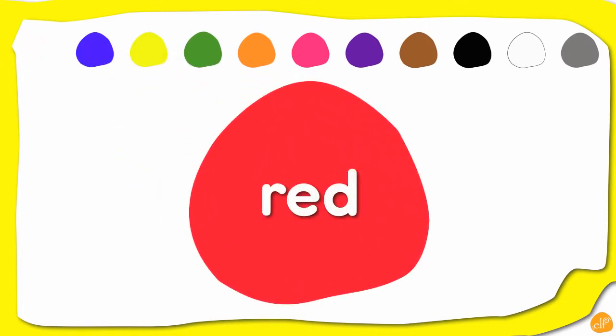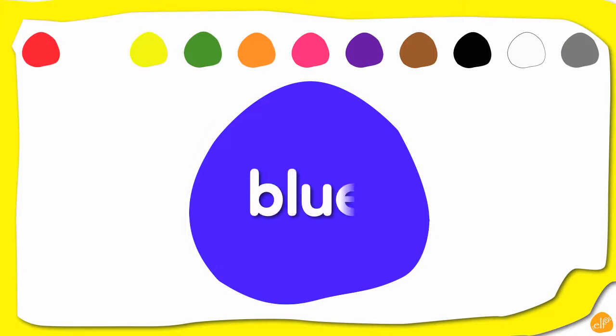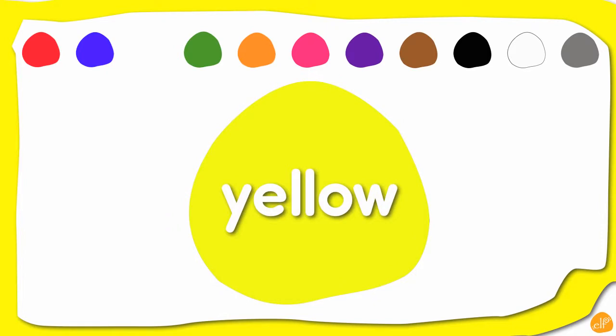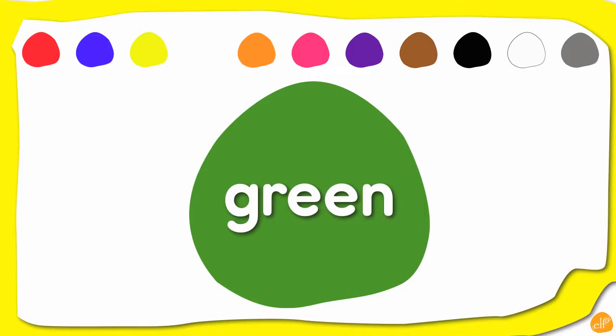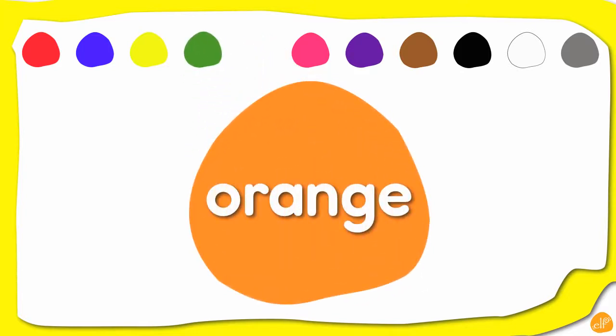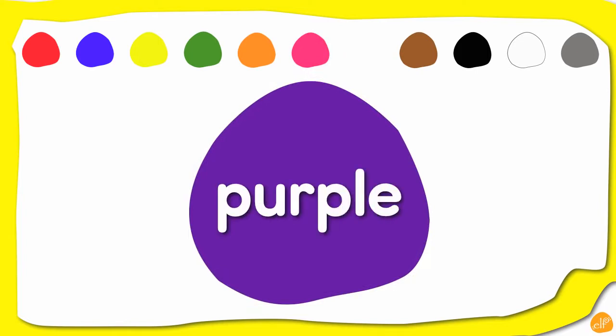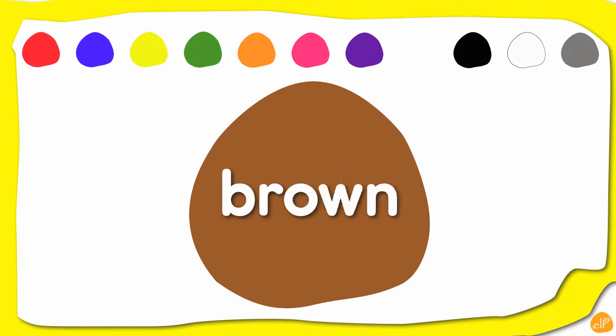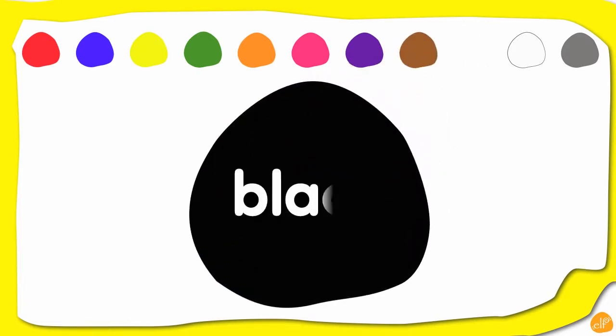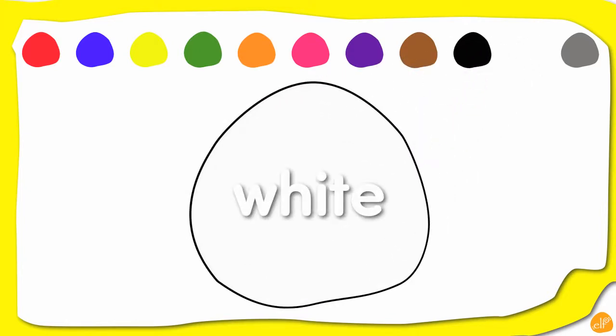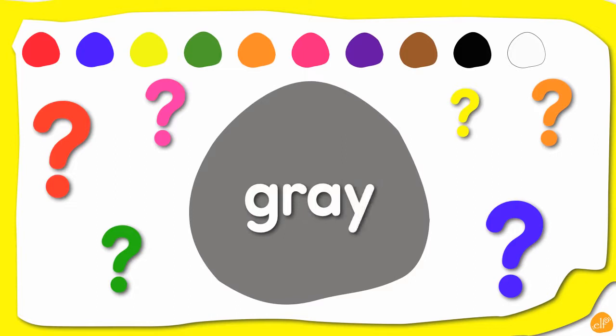Red. Red. Blue. Blue. Yellow. Yellow. Green. Green. Orange. Orange. Pink. Pink. Purple. Purple. Brown. Brown. Black. Black. White. White. And there's one more. What is it? Gray. Gray.